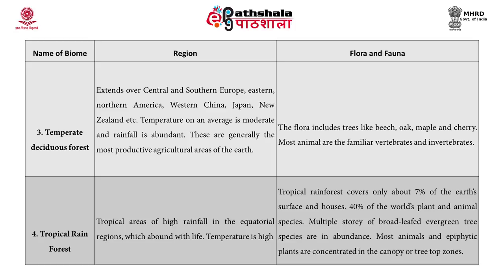Fourth, we have the tropical rainforests, found in tropical areas of high rainfall in the equatorial regions, which abound with life; temperature is high. The tropical rainforest covers about seven percent of the earth's surface and houses about 40 percent of the world's plant and animal species. Multiple stories of broad-leaved evergreen tree species are in abundance, and most animals and epiphytic plants are concentrated in the canopy or treetop zone.